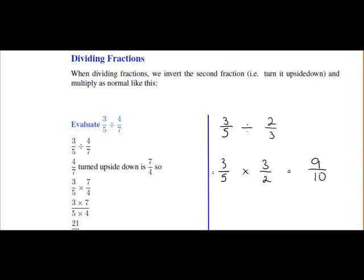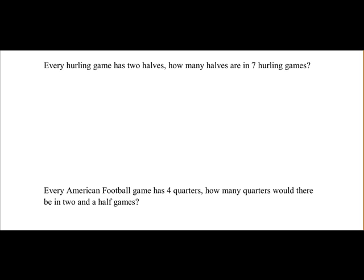So 3 over 5, when it's divided by 2 over 3, we get an answer of 9 over 10. All we do is simply invert the fraction on the right and multiply. Next we'll look at some real life examples where this might be used.